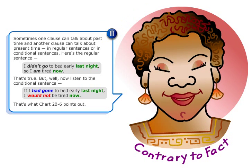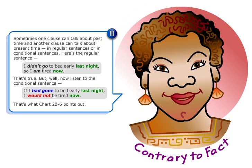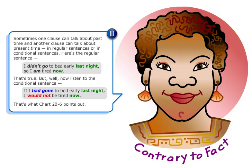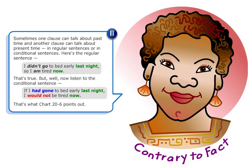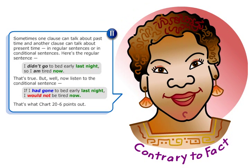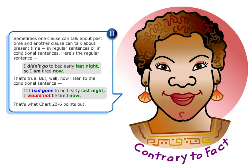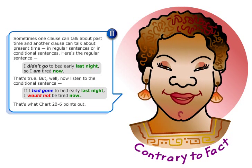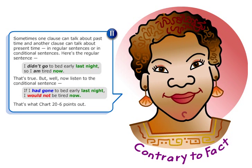Sometimes, one clause can talk about past time and another clause can talk about present time — in regular sentences or in conditional sentences. Here's the regular sentence: I didn't go to bed early last night, so I am tired now. That's true, but now listen to the conditional sentence.